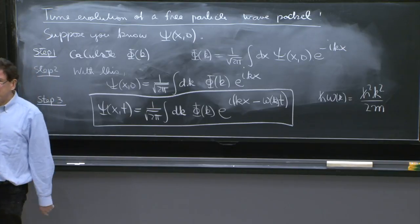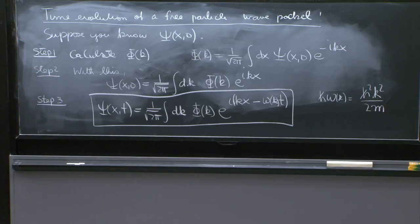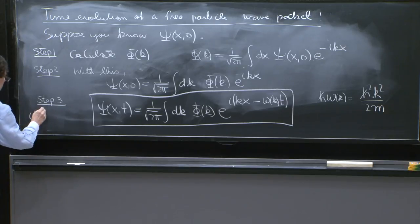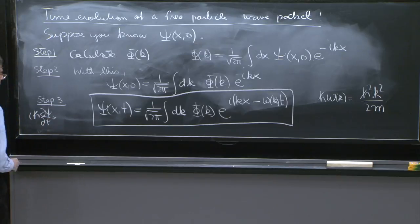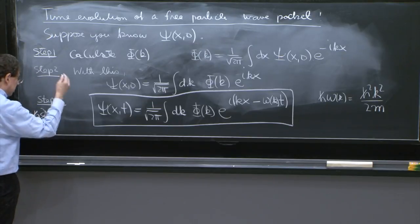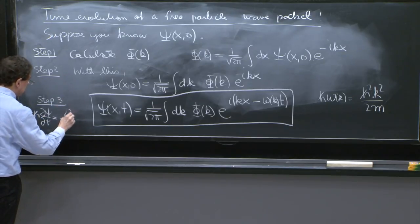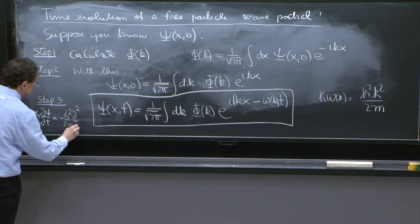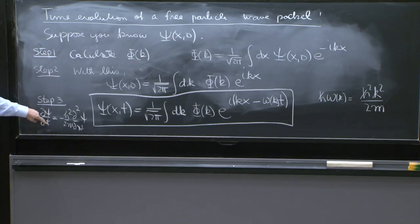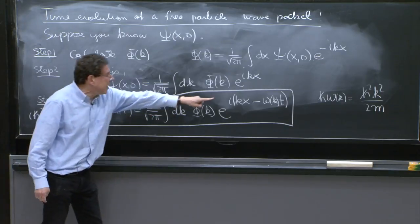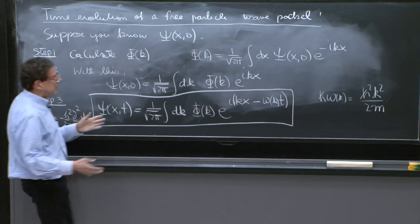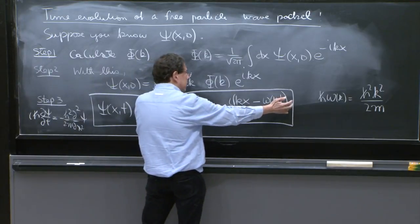So again, the reason is important. If you come equipped with a Schrödinger equation, what should you check? That iℏ dψ/dt equals Ĥψ, which is minus ℏ² over 2m d²/dx² ψ. Well, you can act with iℏ d/dt on this thing, and you remember all that happens is that it all concentrates on this thing.